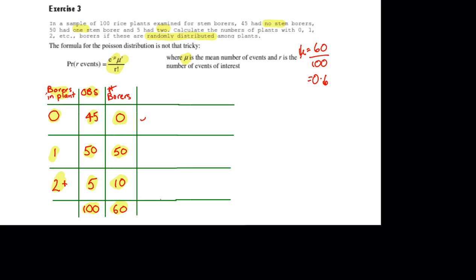So for r = 0, we're going to have e to the minus 0.6, times 0.6 to the power of 0, divided by 0 factorial. For r = 1, it will be e to the minus 0.6 again, times 0.6 to the power of 1, divided by 1 factorial.